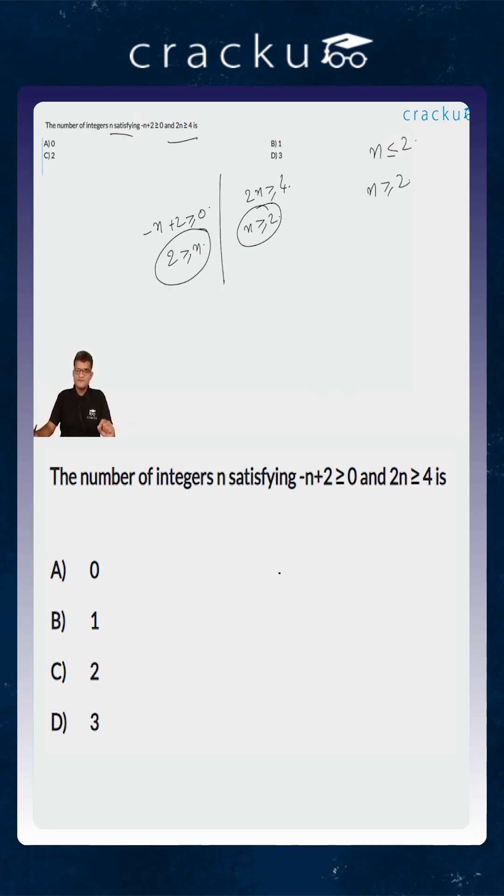This is possible if and only if n is actually equal to 2. So, there is only one integer n which actually satisfies both these inequalities. So, that will be option B.